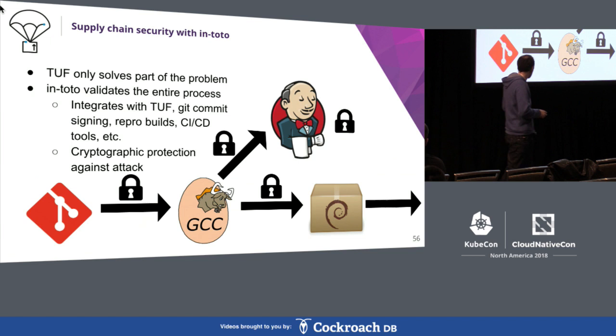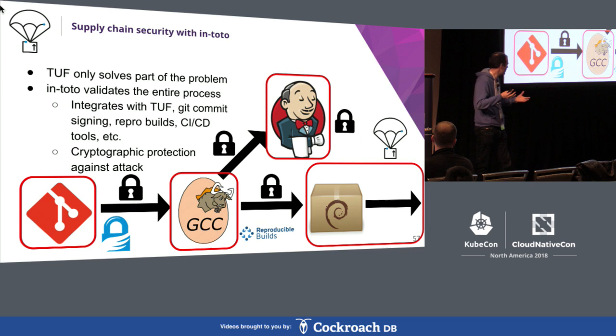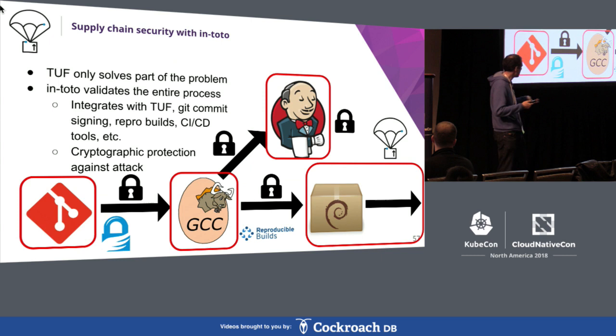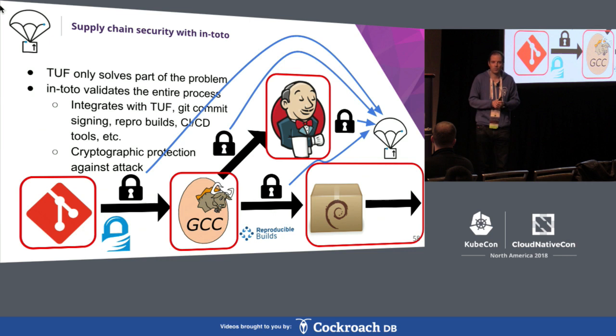In-toto integrates really well with existing pieces of software and signing. In the process of doing this work, we found flaws in the way that Git signing worked, and Git actually changed to use our method of Git signing about two and a half years ago. We've been working closely with the reproducible builds project and with many CI/CD systems. This all integrates smoothly into existing pipelines. Since this is a TUF talk — the metadata for In-toto integrates perfectly into TUF, and TUF can sign and ship it out.